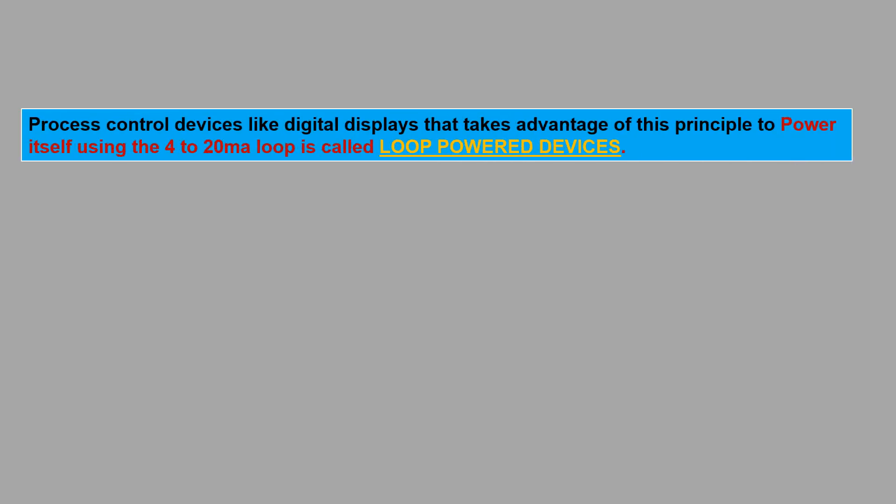Process control devices such as digital displays that take advantage of this principle to power itself using the 4 to 20 mA loop is called loop-powered device.